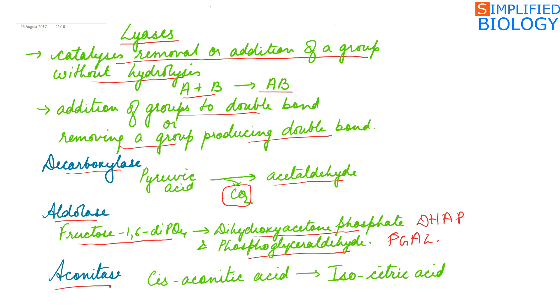Aconitase is another example — it converts cis-aconitic acid into isocitric acid during the conversion of citric acid to its isomer isocitric acid.